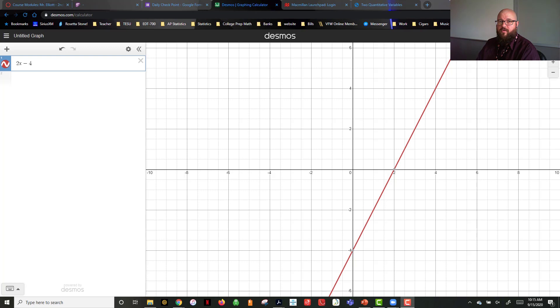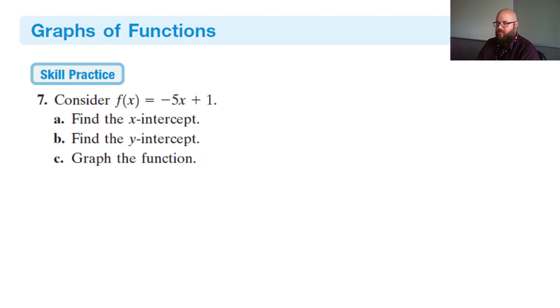If we come to the Desmos graphing calculator and we type in that function up here of 2x minus 4, you'll see it gives us that exact graph that we just drew.